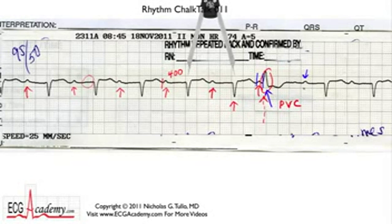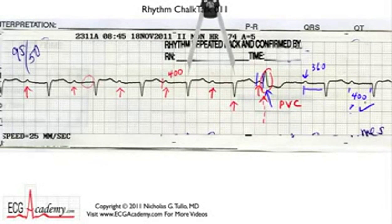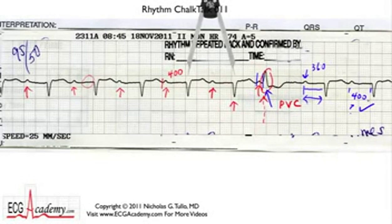The next P wave does occur on time, and then you have a PR interval that's a little bit shorter — about one small box shorter, so we'll call this 360 milliseconds. And this one's back to 400 again. That's because after this bit of a pause, the AV node has a little bit of a break, and so it's able to conduct this P wave a little bit more efficiently at a somewhat shorter PR interval. This is not the same as Wenckebach, but it is a reflection that the AV node conducts better at slower rates and worse at faster rates, and the coupling interval from one beat to the next certainly plays a role in how the AV node conducts.